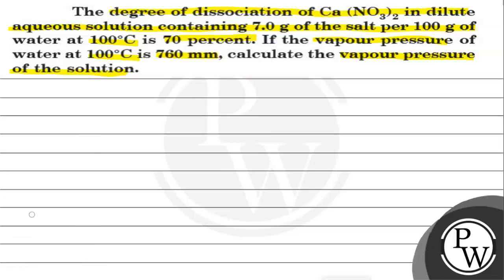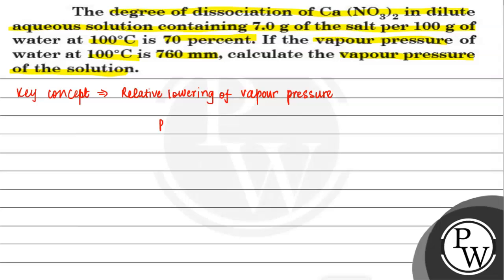When we are asked for the vapor pressure of the solution, the key concept involved is the formula for relative lowering of vapor pressure. According to this question, we will apply the relative lowering of vapor pressure formula.